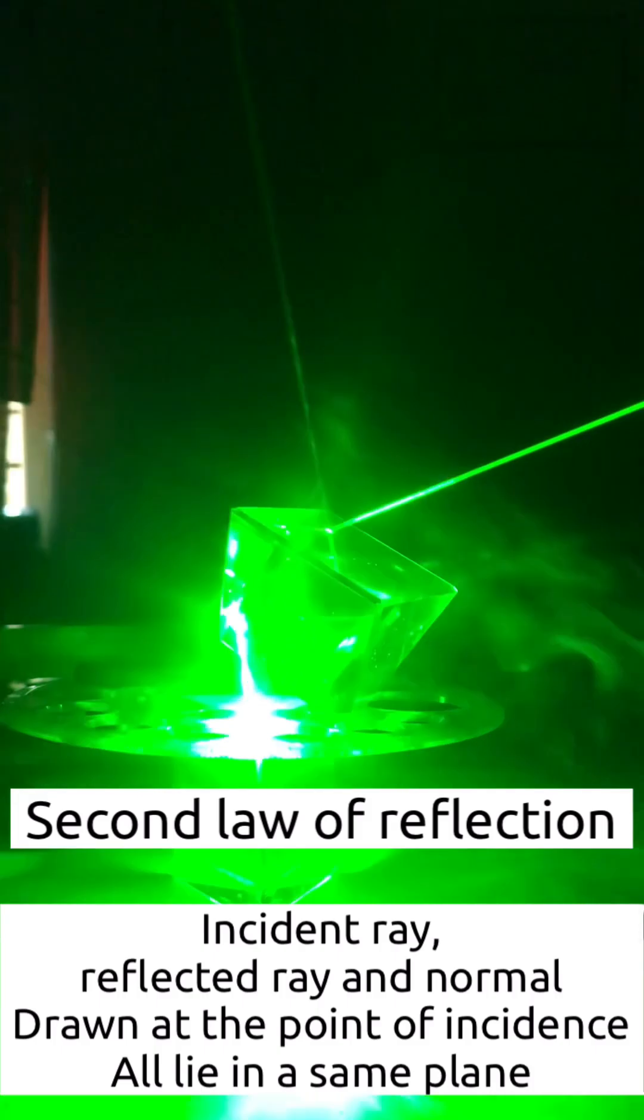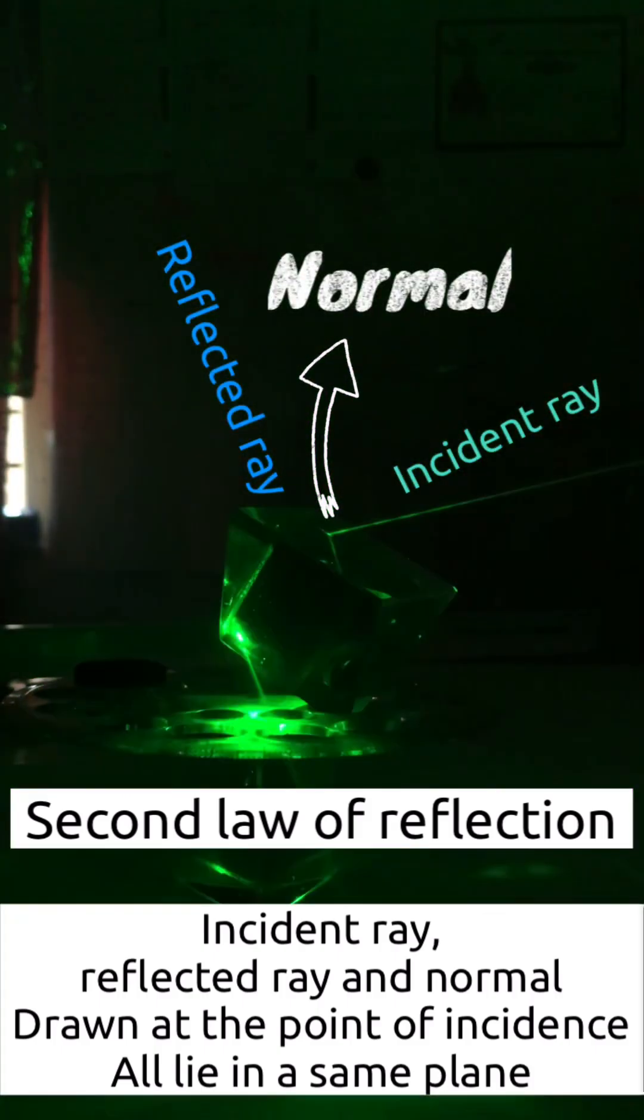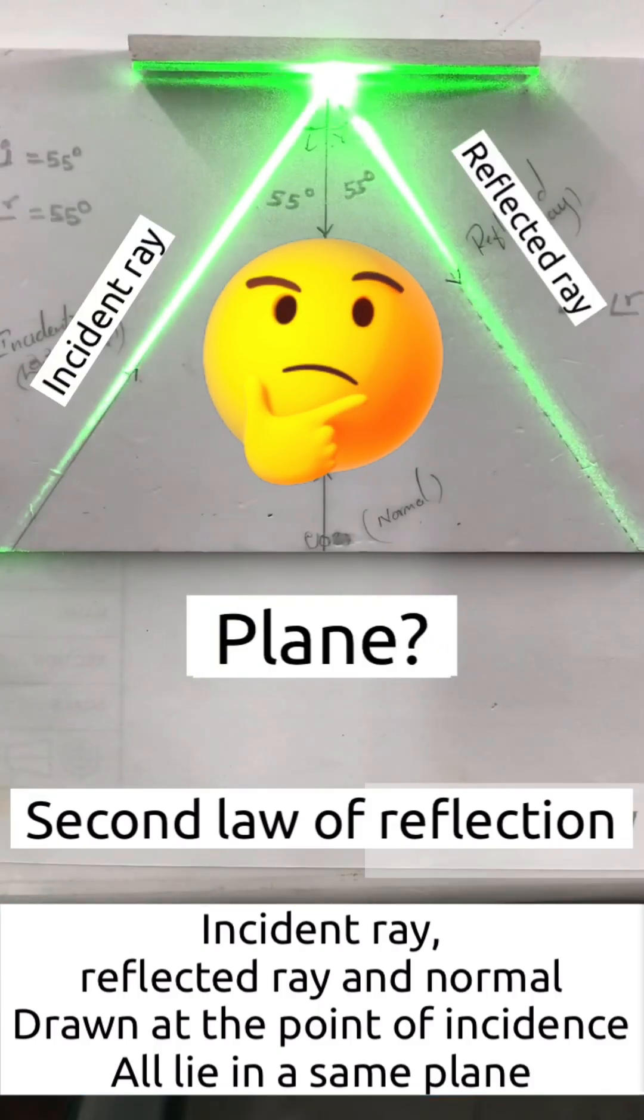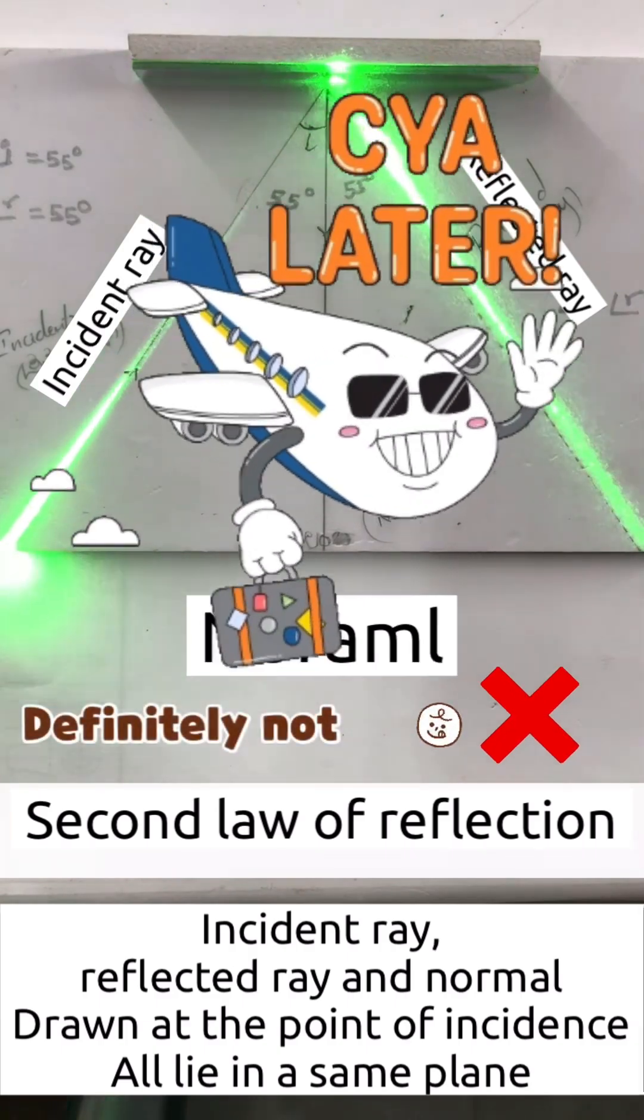As we already know about the incident ray, the reflected ray and the normal, then what does this plane mean? Is it an airplane? No, definitely not.